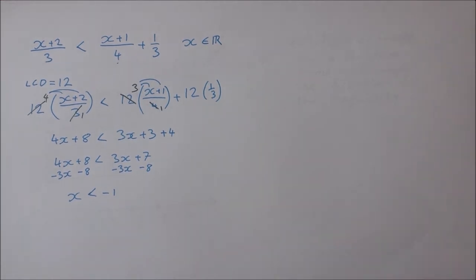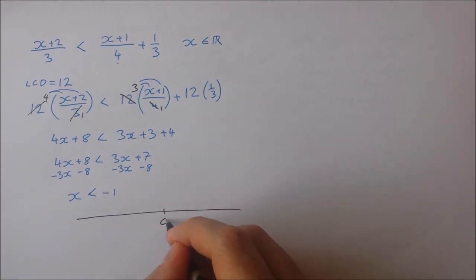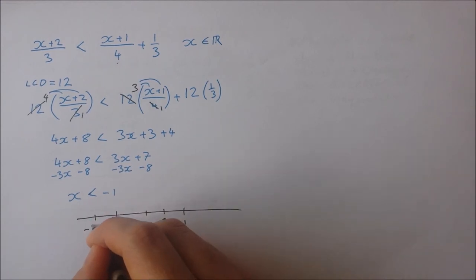So to do this on the number line, we'll draw our number line once again. I have 0, 1, minus 1, minus 2, minus 3.